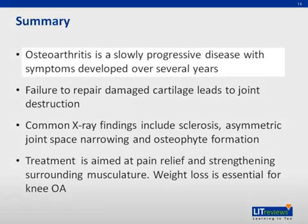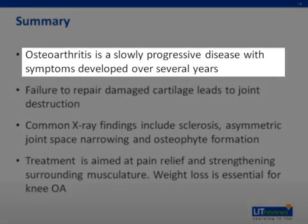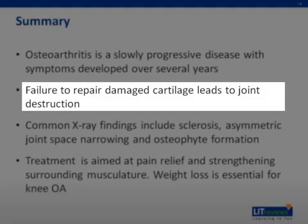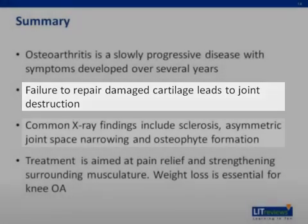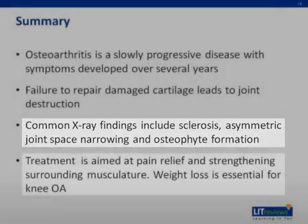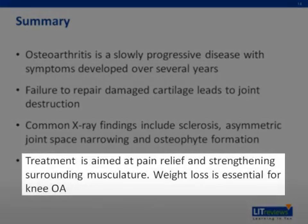To summarize, osteoarthritis is a slowly progressive disease whose symptoms develop over several years. Failure to repair damaged cartilage leads to joint destruction. Common x-ray findings include sclerosis, asymmetric joint space narrowing, and osteophyte formation. Treatment is aimed at pain relief and strengthening of the surrounding musculature. Weight loss is essential for knee OA.